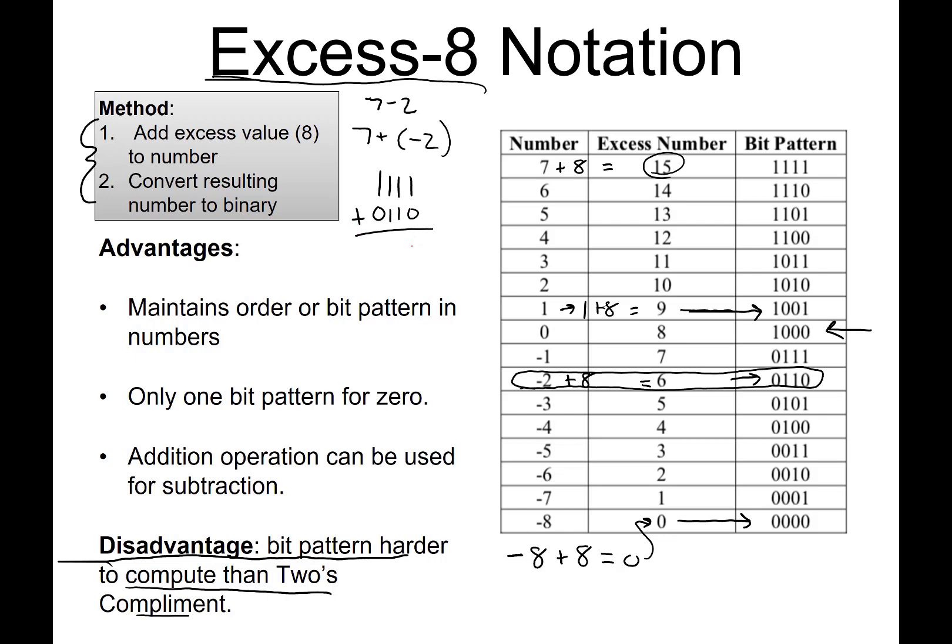If we just add these together, we get 10101, which equals 5. And that's what we're expecting because 7 minus 2 is 5.